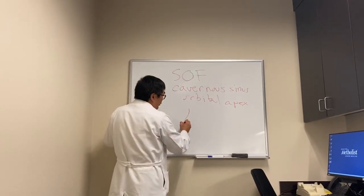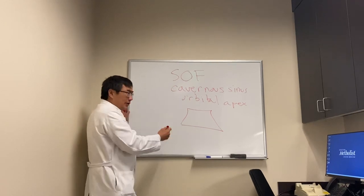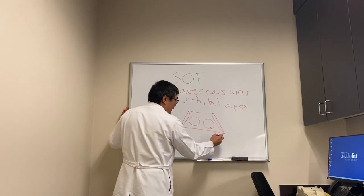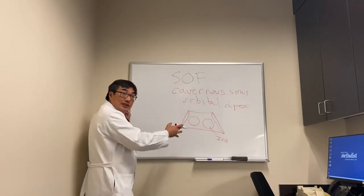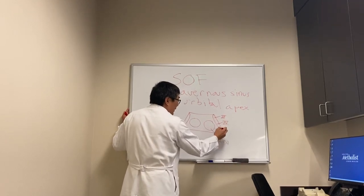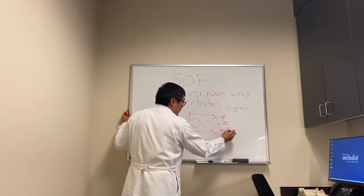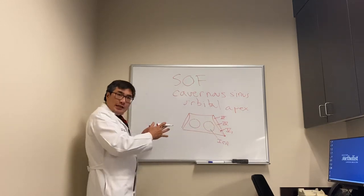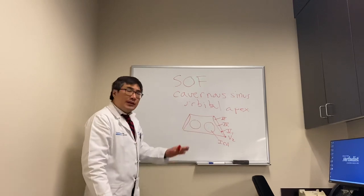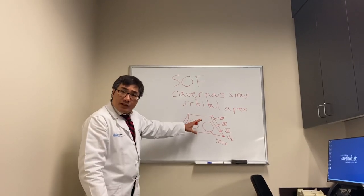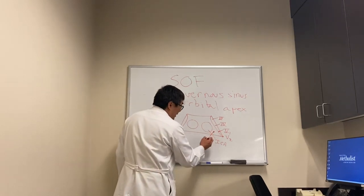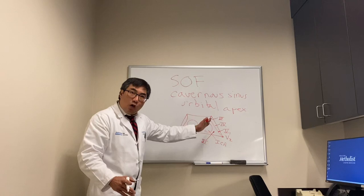The cavernous sinus, shown here in coronal section, has a dural wall and the internal carotid artery is inside the cavernous sinus. In the wall are cranial nerves 3, 4, and 5 subdivision 1 in the anterior portion, and V2 in the posterior portion. V3 does not go into the cavernous sinus and exits out the foramen ovale. The 6th nerve is in the substance of the cavernous sinus, not in the wall.